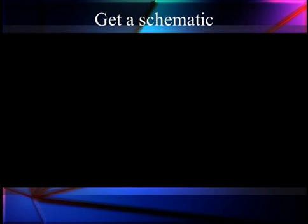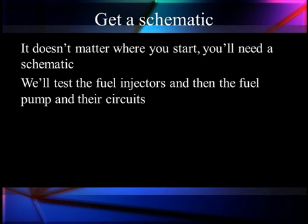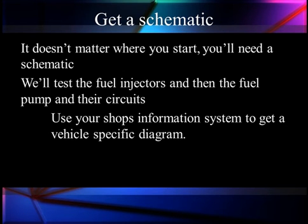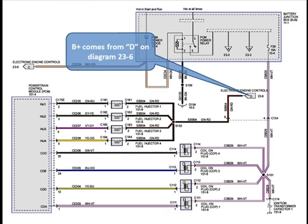First and foremost, we always stress: let's get a schematic. It doesn't matter where you start, you're still going to need a schematic. We're going to test the fuel injectors because we've picked that area, and then we're going to test the fuel pumps and their associated circuits. But for right now, we're going to focus on checking fuel injectors several different ways. Use your shop information system to get a specific diagram so we know what we're looking at. We have highlighted in red the four fuel injectors on our system. The problem with this diagram is we don't know where the grounds and power are in reality — we can make some assumptions, but let's go see how we would find out.